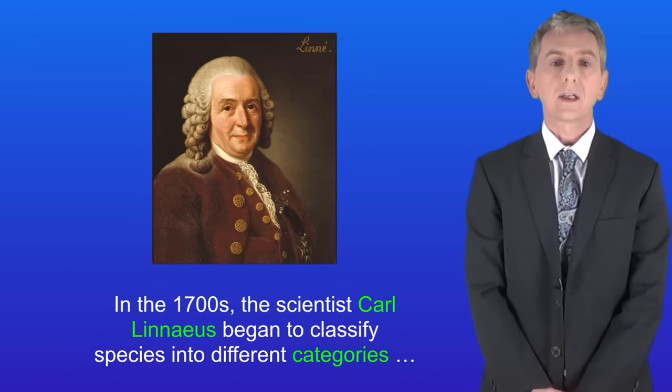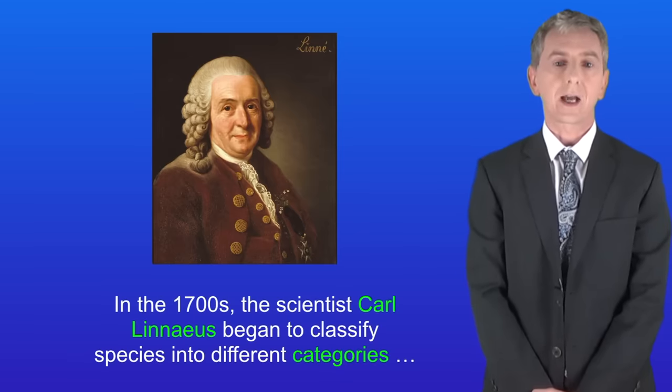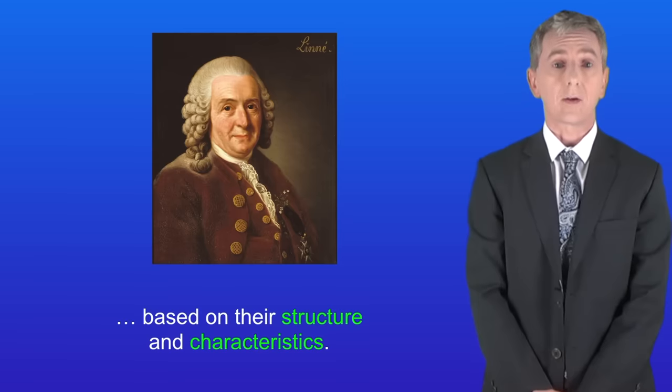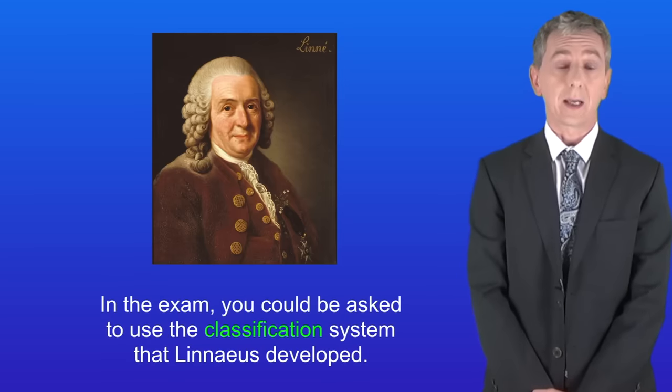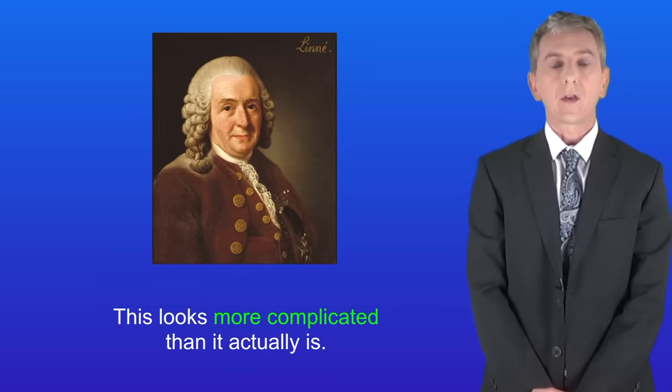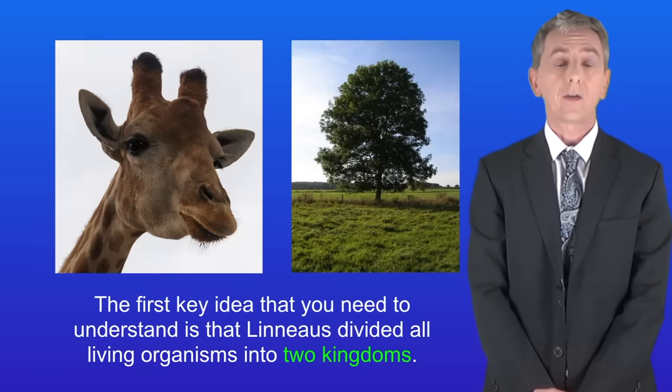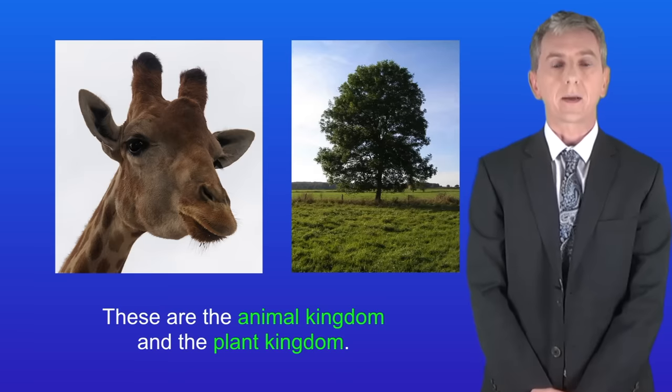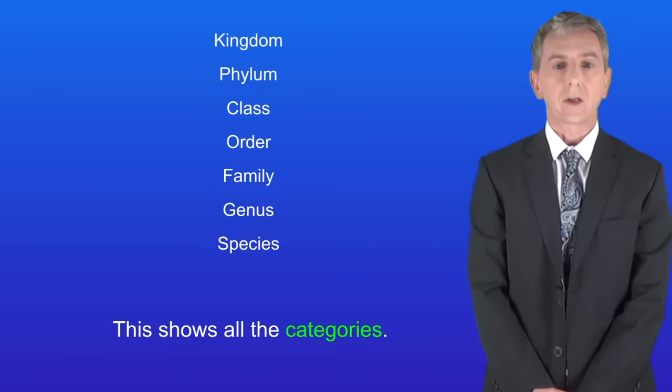Now in the 1700s the scientist called Linnaeus began to classify species into different categories based on their structure and characteristics. In the exam you could be asked to use the classification system that Linnaeus developed. I should point out that this looks more complicated than it actually is. The first key idea that you need to understand is that Linnaeus divided all living organisms into two kingdoms. These are the animal kingdom and the plant kingdom. Linnaeus then divided each kingdom into a number of smaller categories. I'm showing you all the categories here.